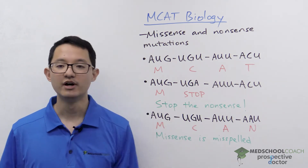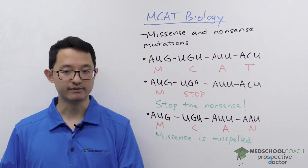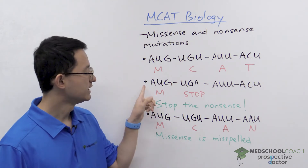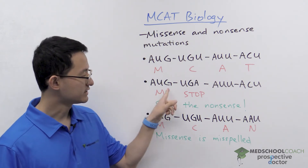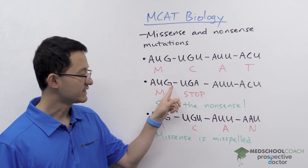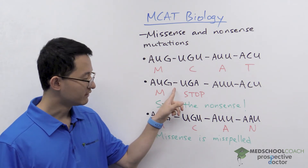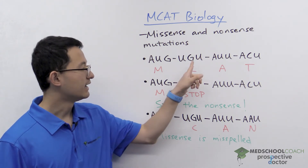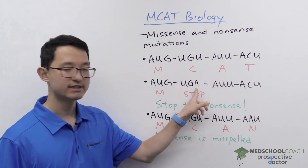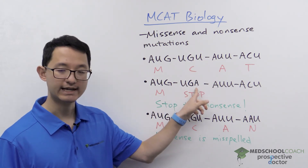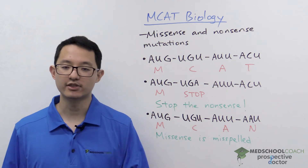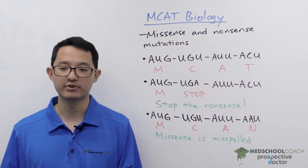In the second row, we have an example of a nonsense mutation. If you look at these two sequences, you'll notice that it's all the same except one of the base pairs — the U in the second codon has been mutated to an A. The consequence is that UGA is one of our three stop codons.